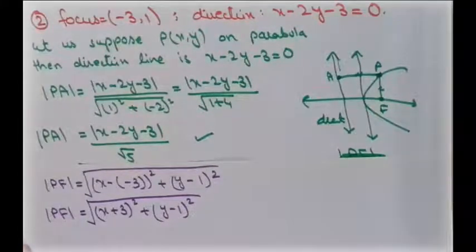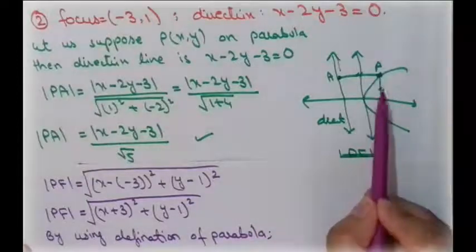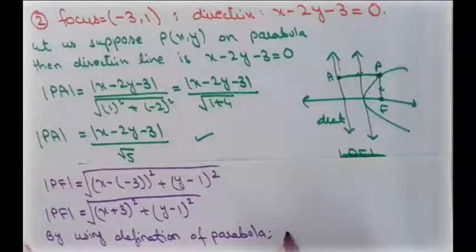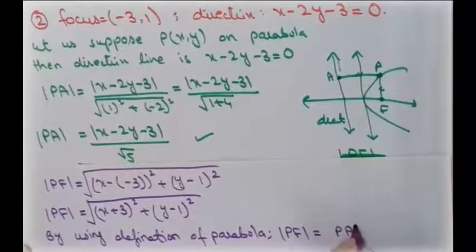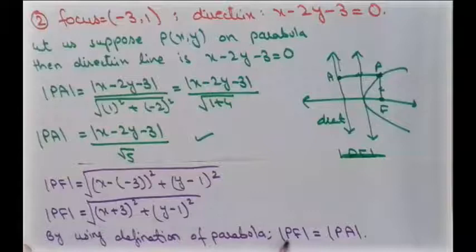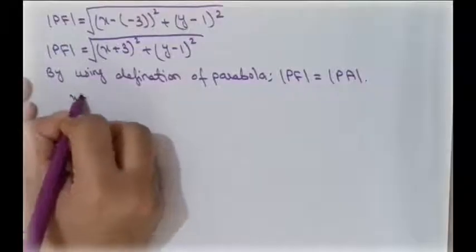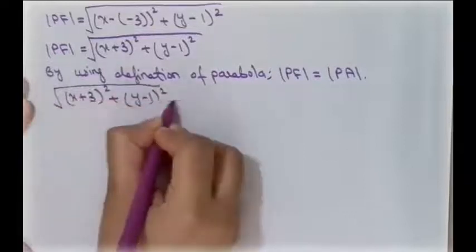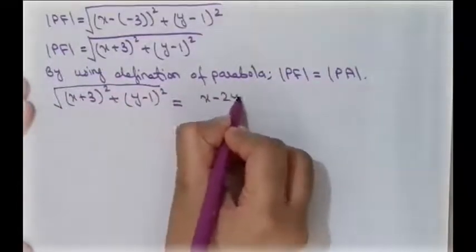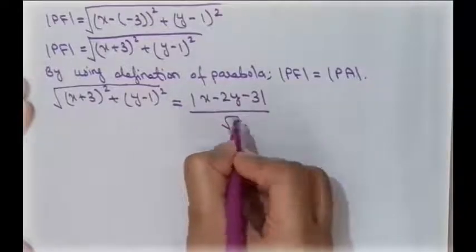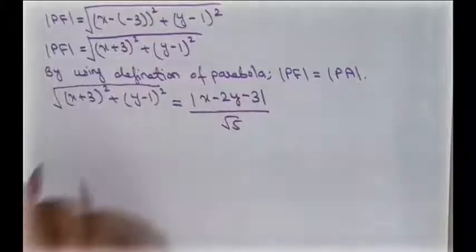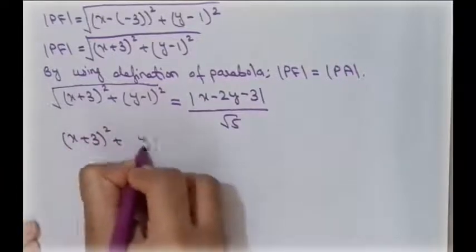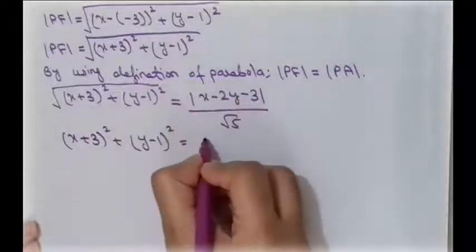By the definition of a parabola, the distance between a point and the focus equals the distance from the point to the directrix, so PF = PA. Substituting: √((x + 3)² + (y − 1)²) = |x − 2y − 3| / √5. Squaring both sides to eliminate the radicals: (x + 3)² + (y − 1)² = (x − 2y − 3)² / 5.